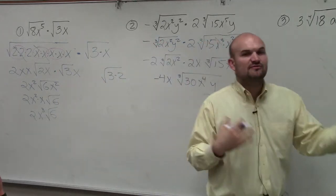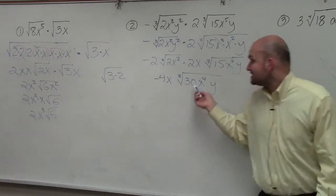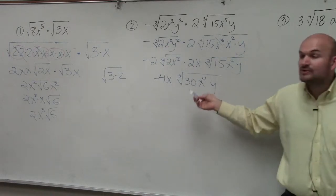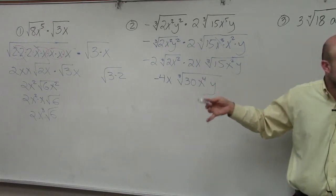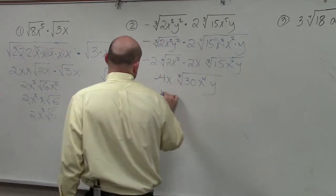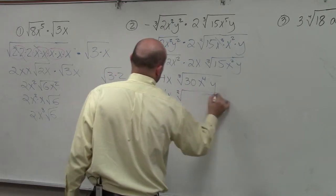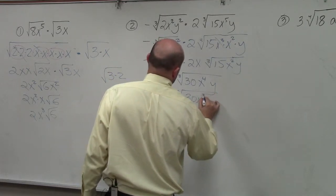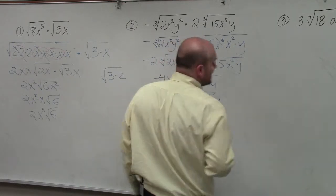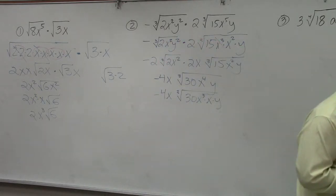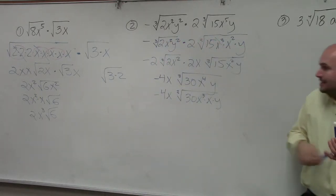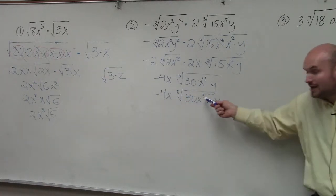Now we look to simplify this again. And again, I see that x to the fourth, I can rewrite that as x cubed times x. Now, why do I want to write it as x cubed times x instead of x to the fourth? Because I know that I can take the cube root of x cubed.